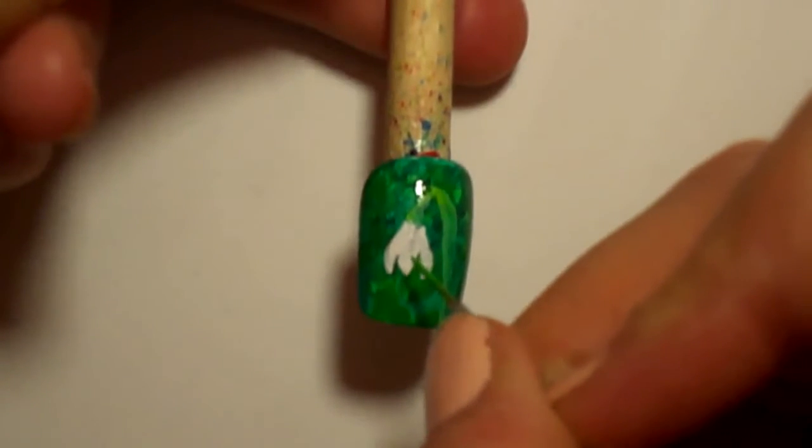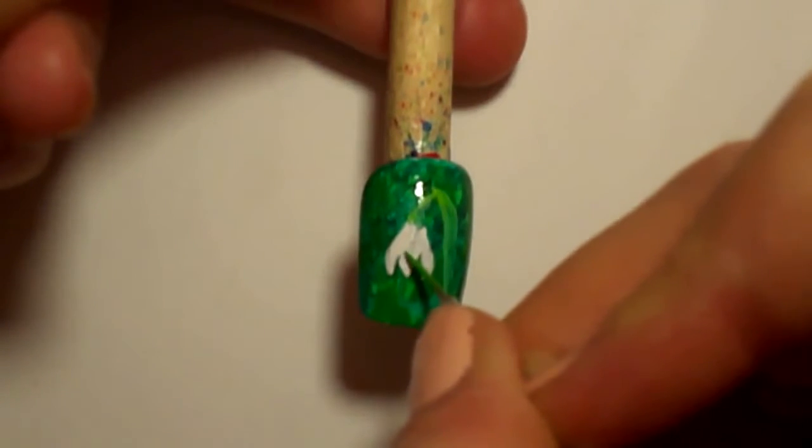I also added some light green details on the petals and decided to paint a leaf on the right side of the stem of the flower.